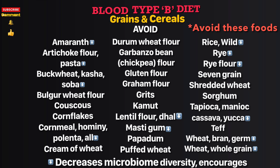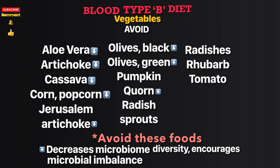Grains and cereals to avoid: amaranth, artichoke flour pasta, buckwheat, kasha, soba, bulgur wheat flour, couscous, cornflakes, cornmeal, hominy, polenta, cream of wheat, durum wheat flour, garbanzo bean flour, gluten flour, graham flour, grits, kamut, lentil flour, dal, muesli, gum, popadum, puffed wheat, wild rice, rye, rye flour, seven grain, shredded wheat, sourgum, tapioca (manioc, cassava, yucca), teff, and wheat bran, germ, and whole grain.